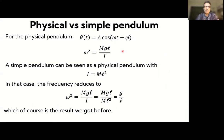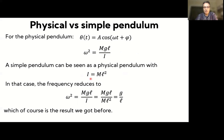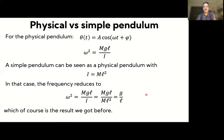We can recover the simple pendulum result from the physical pendulum formula. For a simple pendulum — all mass concentrated at one point a distance L from the pivot — the moment of inertia is I = mL². Substituting: ω² = mgL/(mL²) = g/L. The m and one factor of L cancel, giving exactly the simple pendulum result. The simple pendulum is just one limiting case of the physical pendulum.